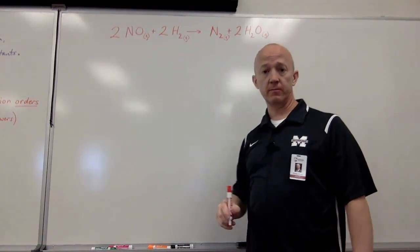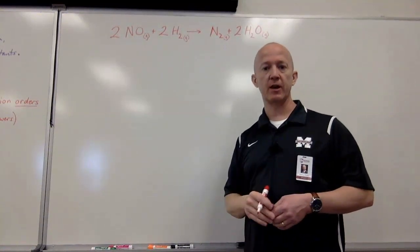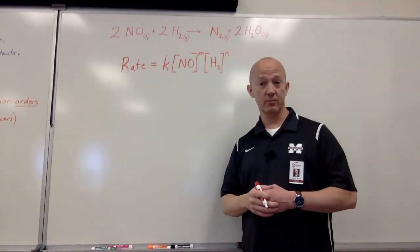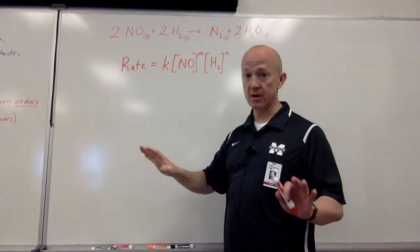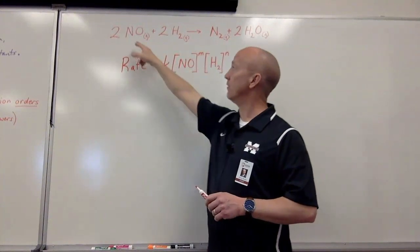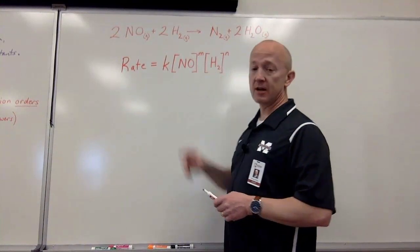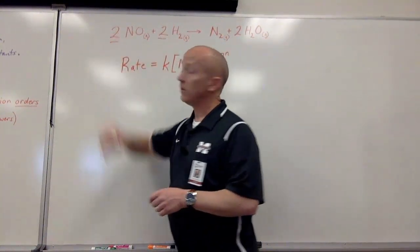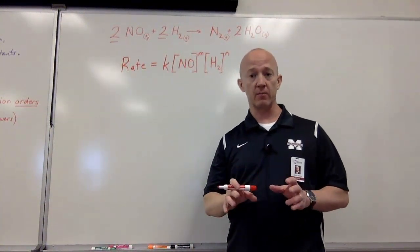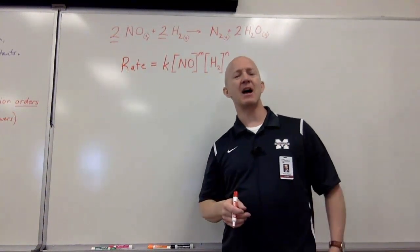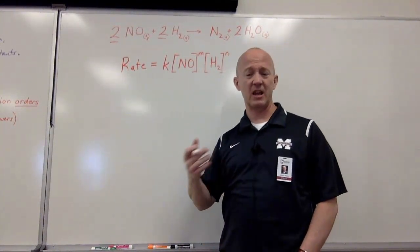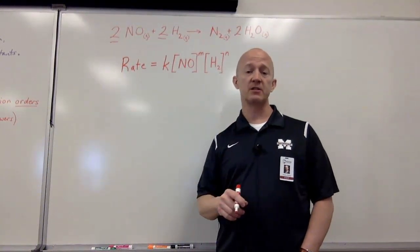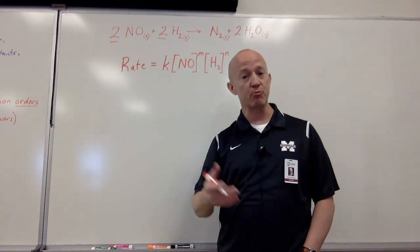Here's another one: the reaction of nitrogen monoxide and hydrogen to produce nitrogen gas and water. The rate law is: the rate equals some constant K, multiplied by the concentration of nitrogen monoxide to the nth power, multiplied by the concentration of hydrogen to the nth power. You might notice we haven't used the coefficients at all — the coefficients don't have any bearing on the rate law. We can only determine the actual values of m and n through experimentation.